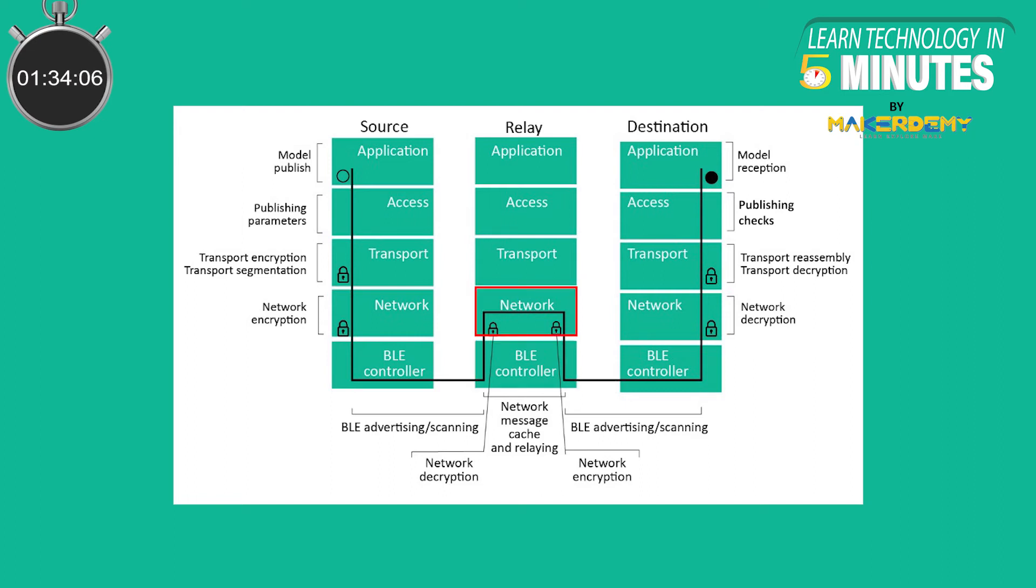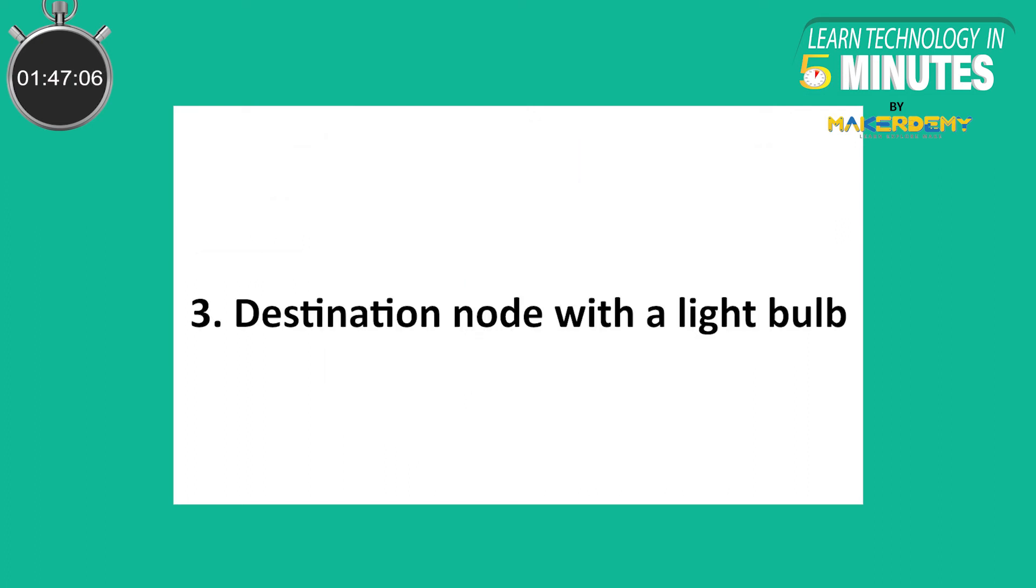The network packet is decrypted and if the receiving node is not its destination, the packet's time to live value is decreased by 1 before being re-encrypted with the same network key and passed back to the Bluetooth low energy controller to be relayed.